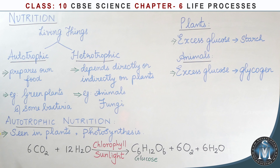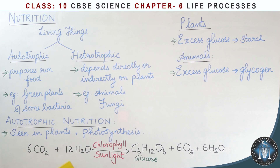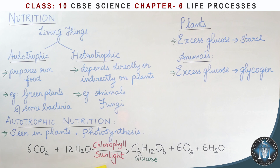Now, autotrophic nutrition in detail. Plants carry out a process called photosynthesis. The chemical equation for photosynthesis involves carbon dioxide, water, plants with chlorophyll, and sunlight to produce glucose.